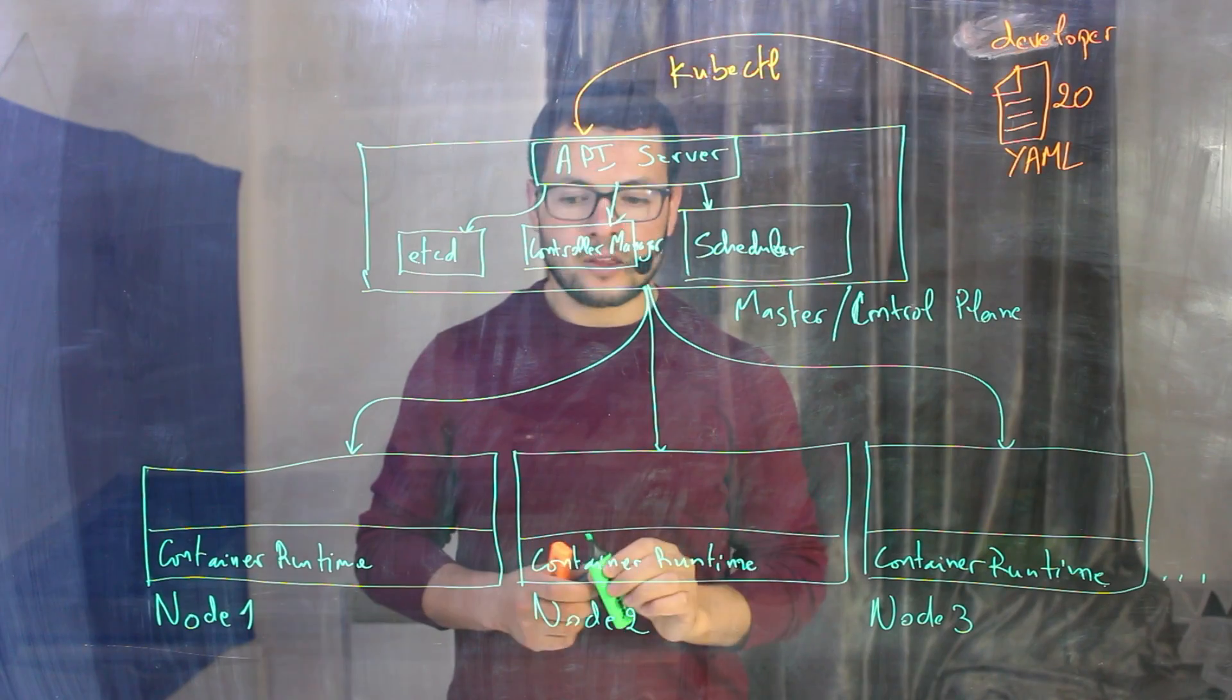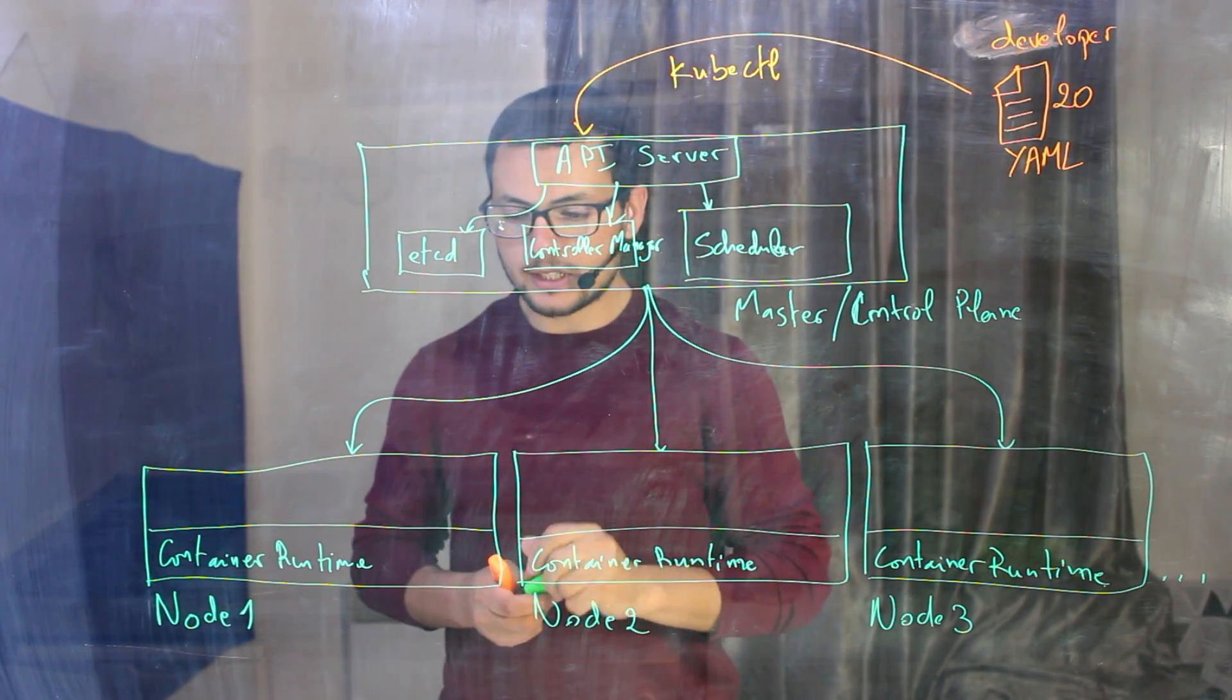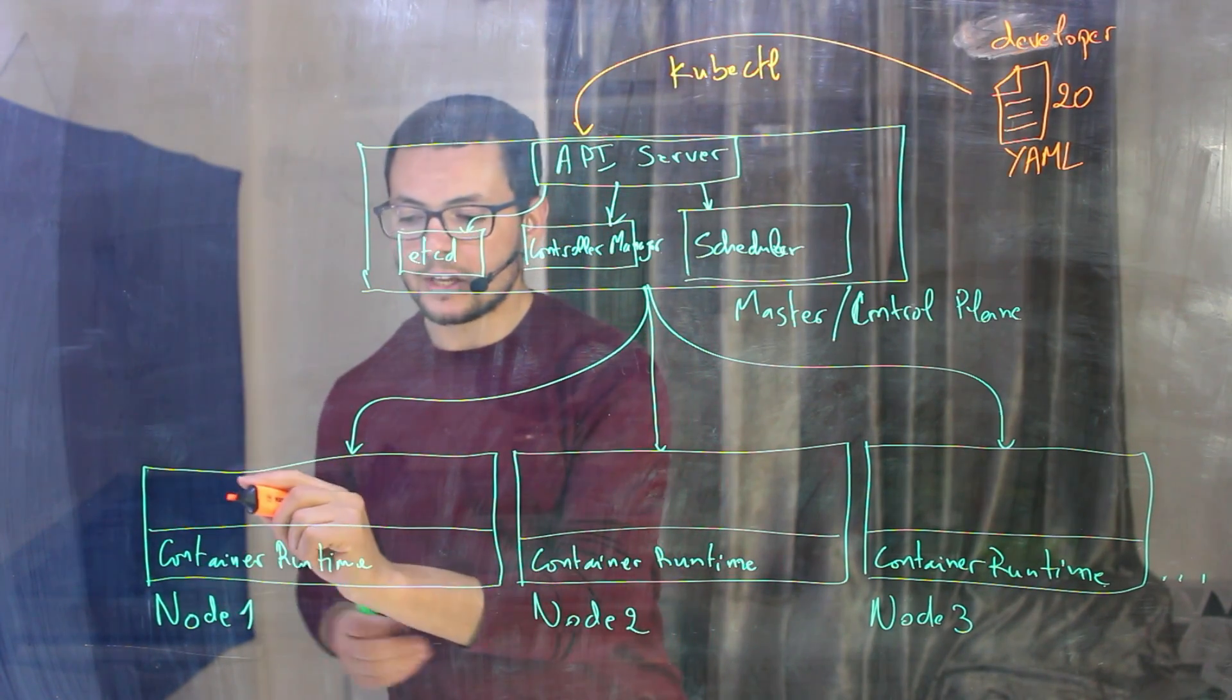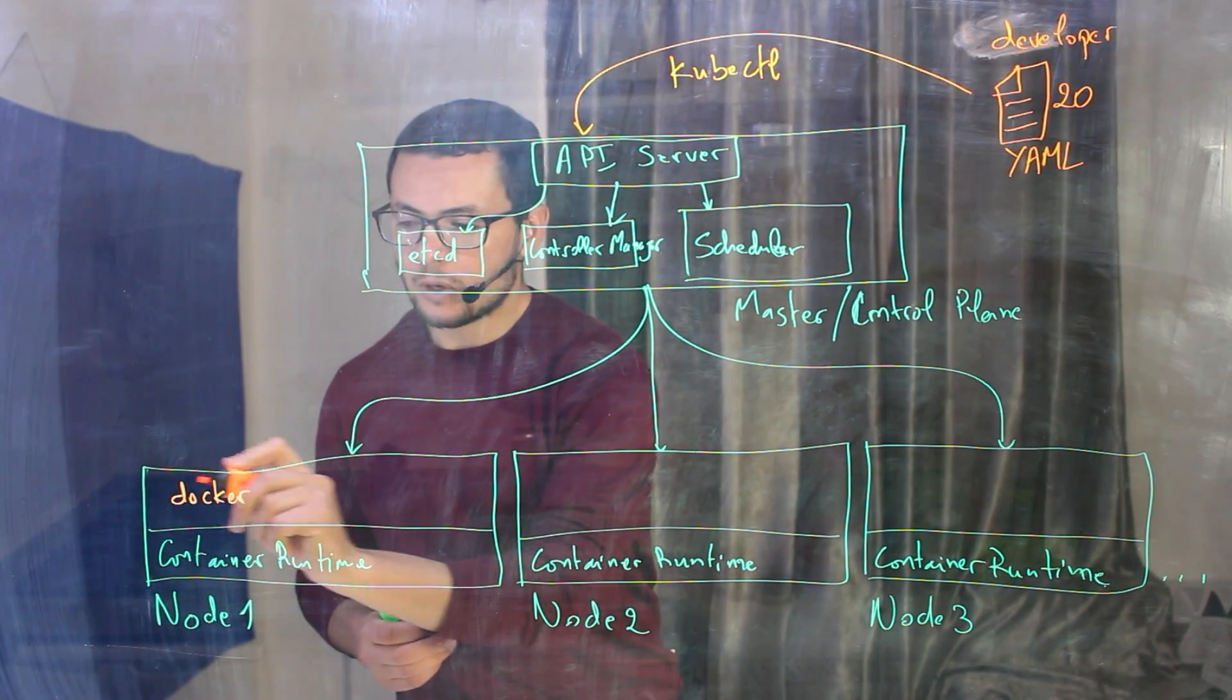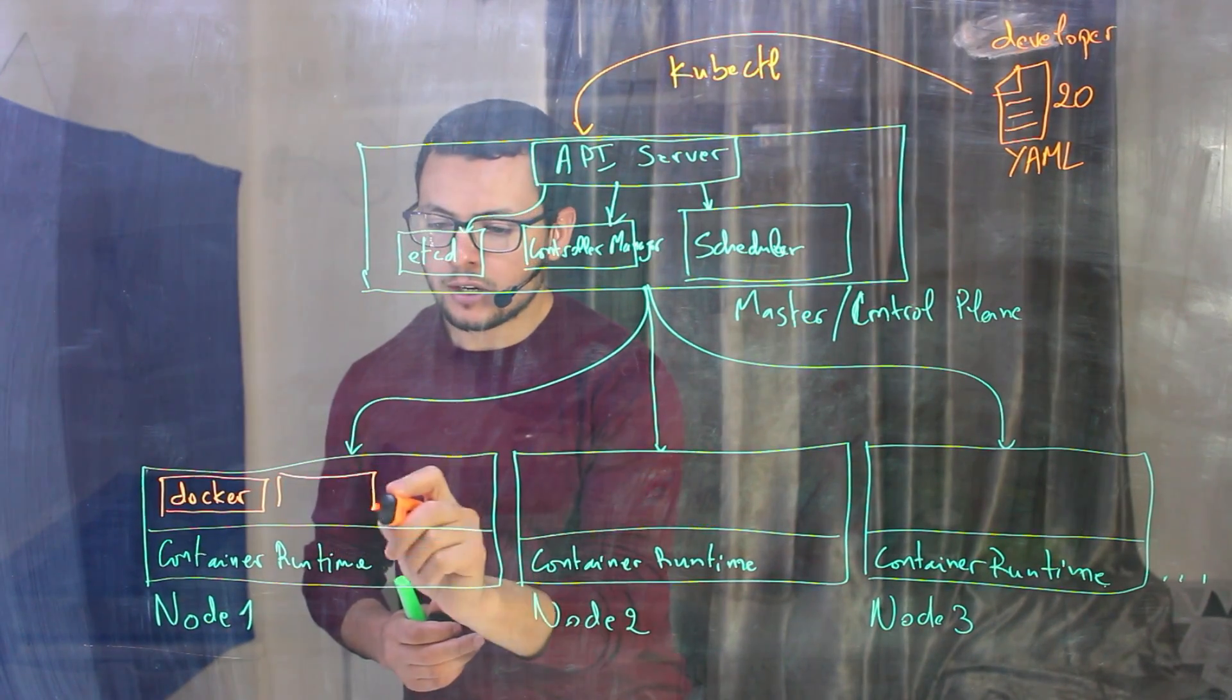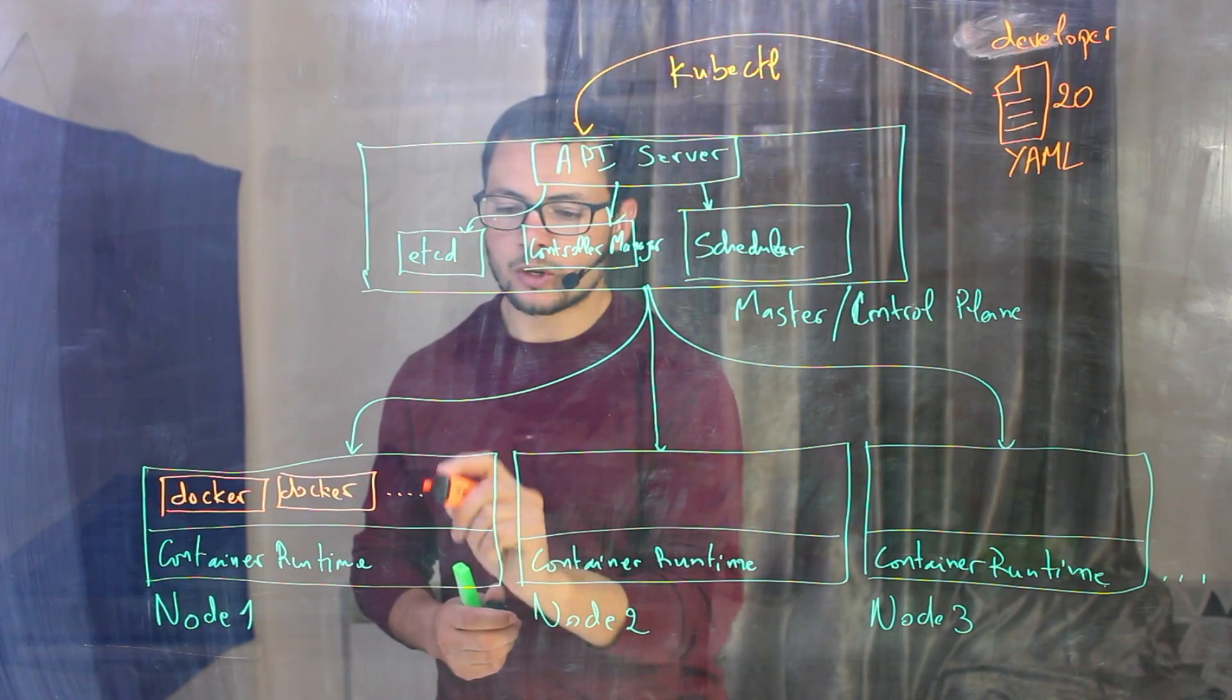So it will check that it will see that here I need to run 20 containers here. So it will say, for example, I have enough space in my node number one. So I'll go to create here, let's say five containers maybe. So I'll have one docker container here, then another one running against it. Another docker here and so on.